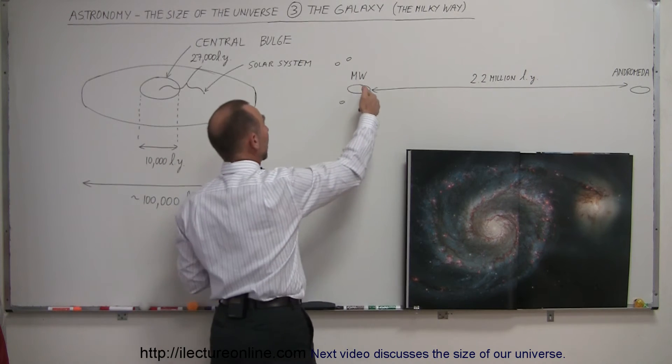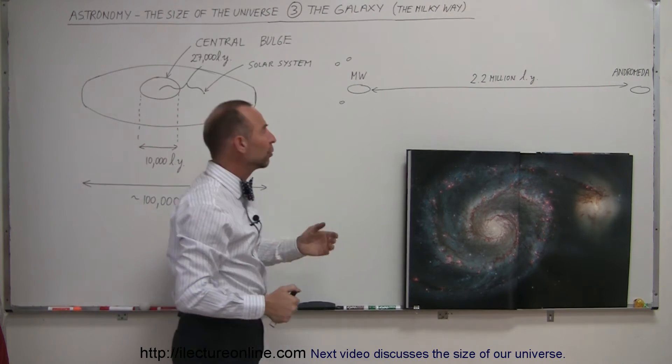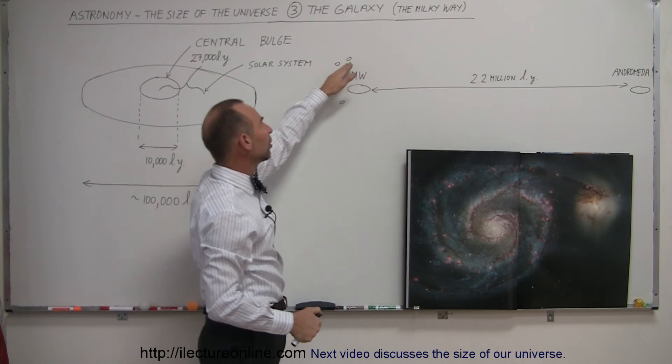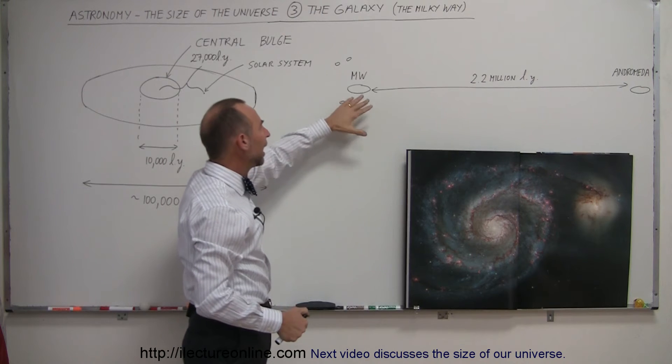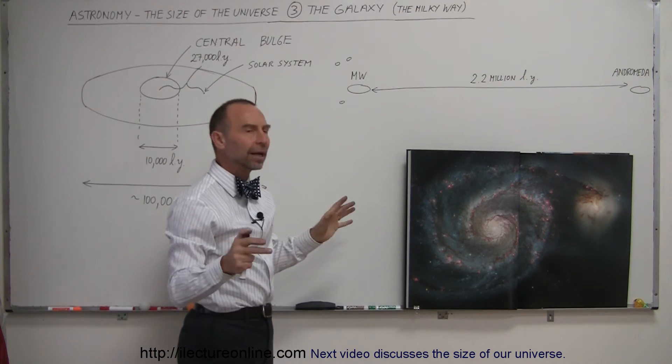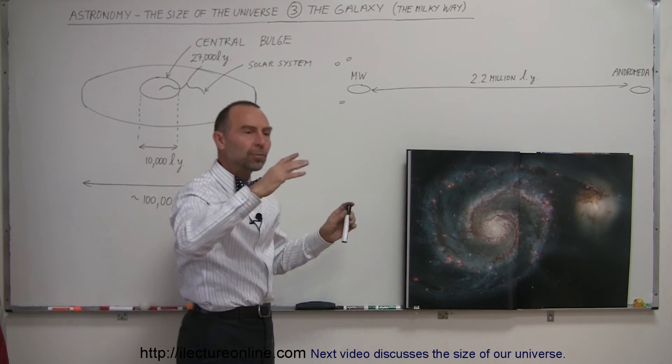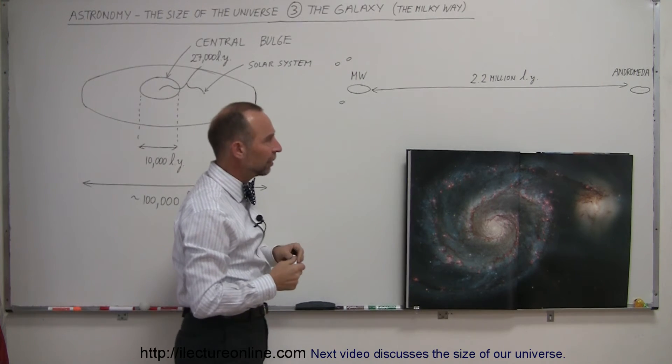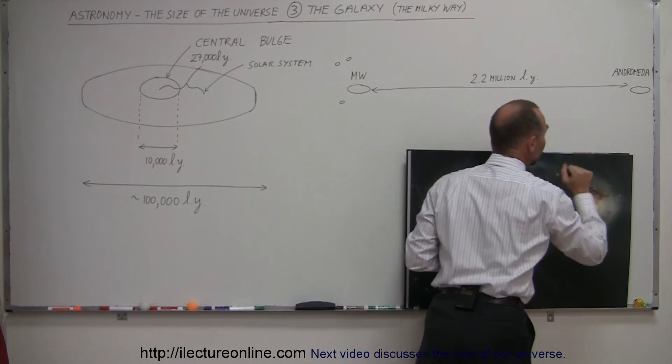It turns out our galaxy is surrounded by a few small number of what we call dwarf galaxies. We have the Magellanic Clouds, the large and the small Magellanic Cloud. We have another one on the other side of the galaxy. And there's several more that are kind of close by. But in our own local group, and we'll talk more about how galaxies are clustered together, there's another very large galaxy called the Andromeda Galaxy. Right over here.